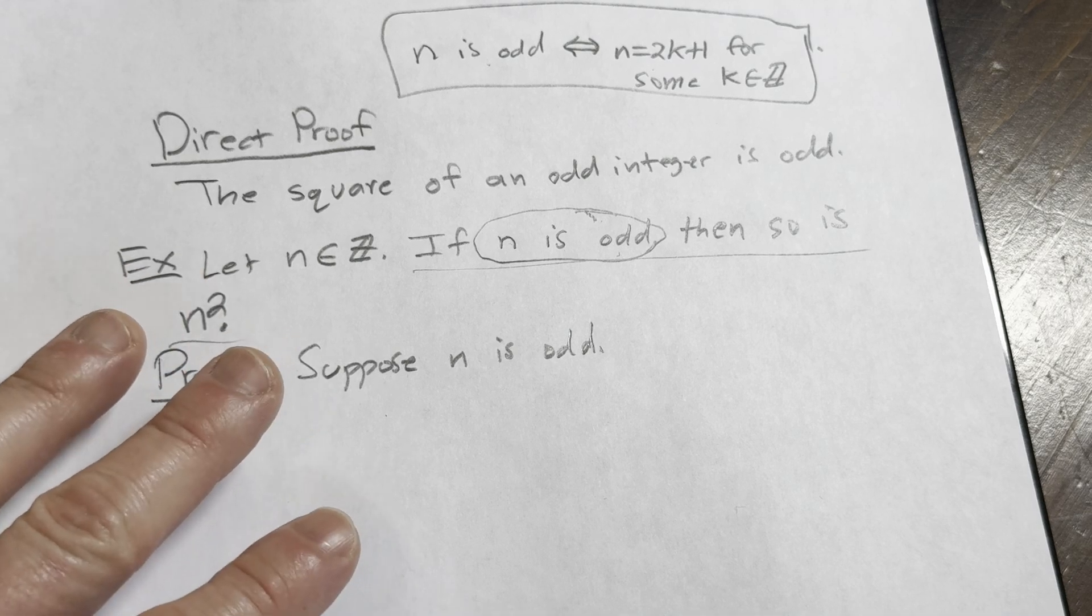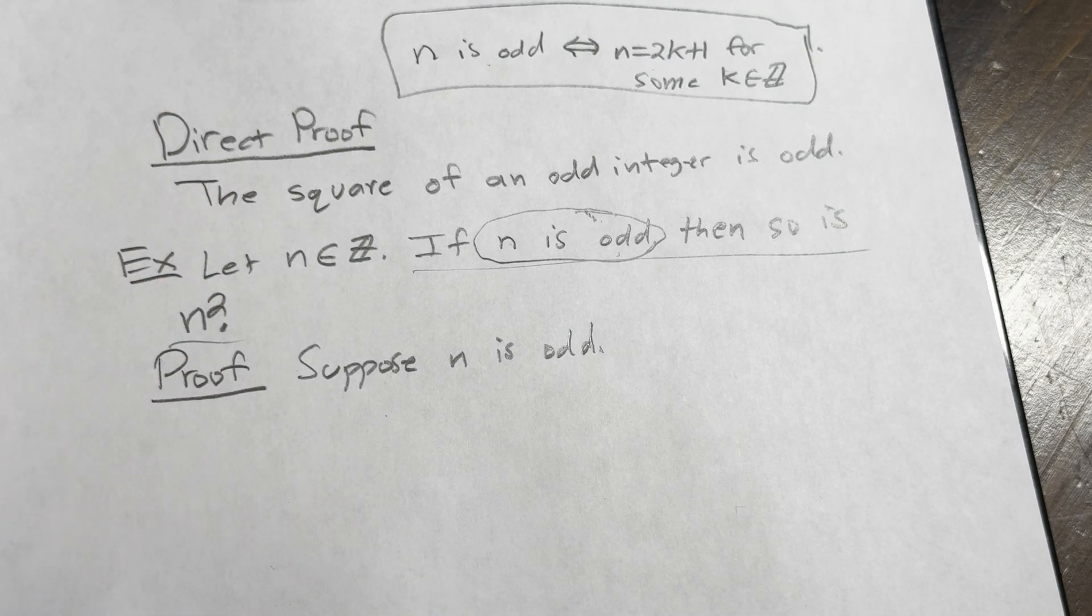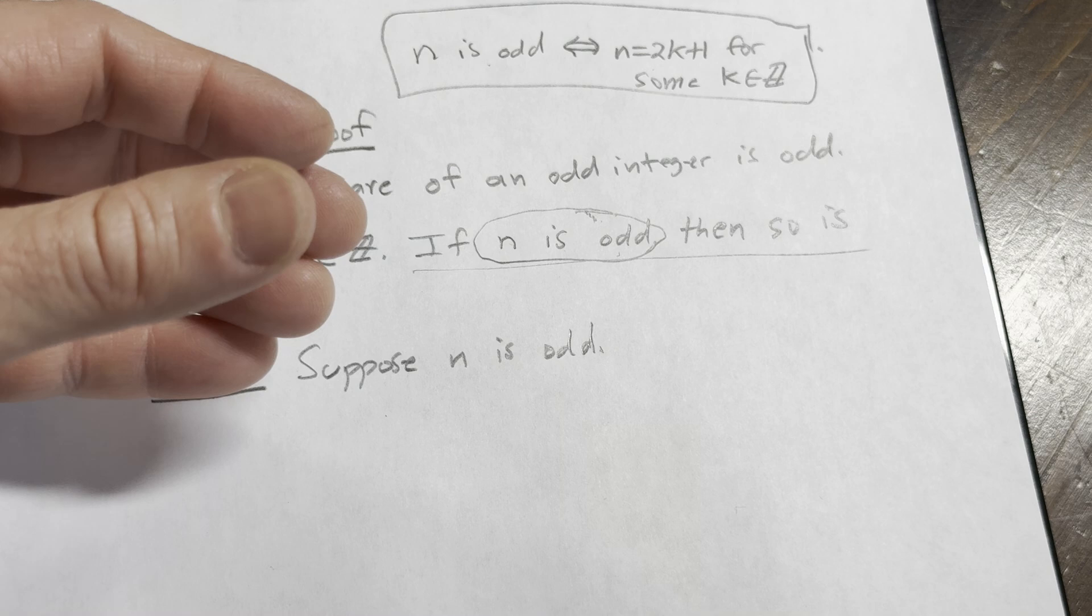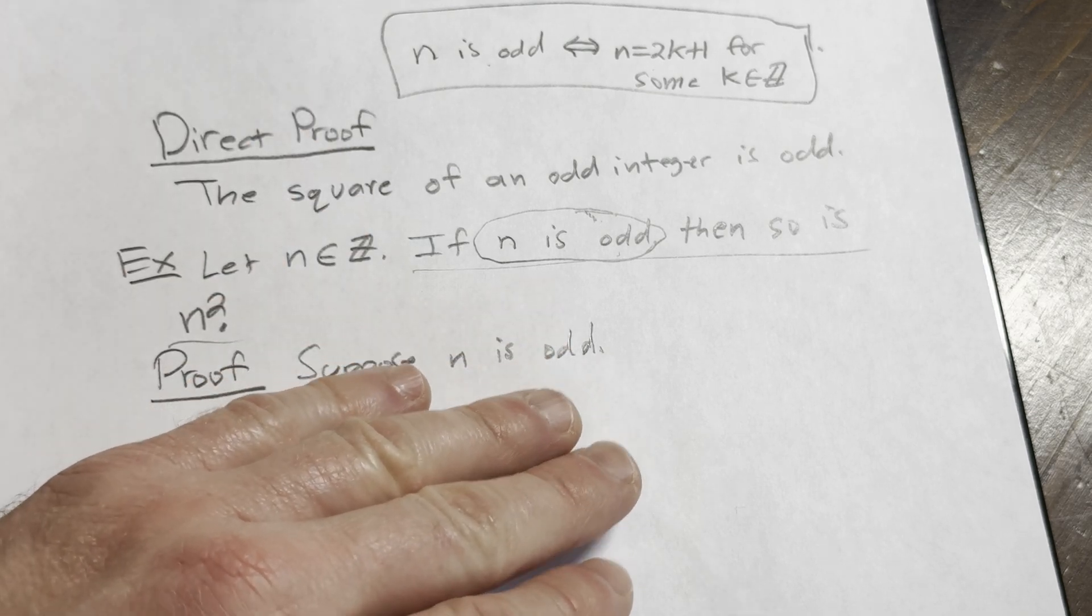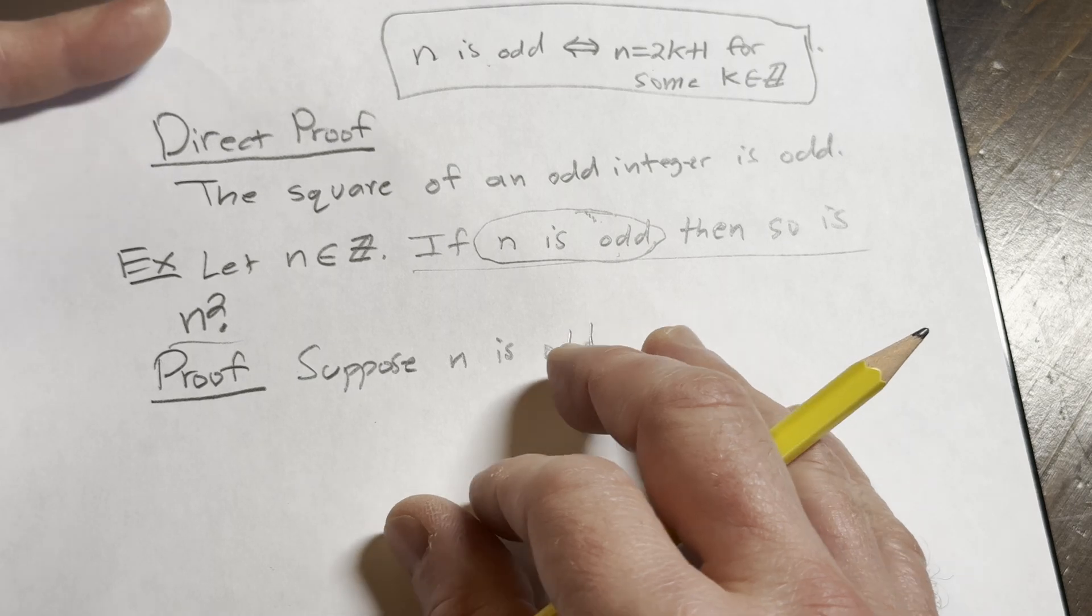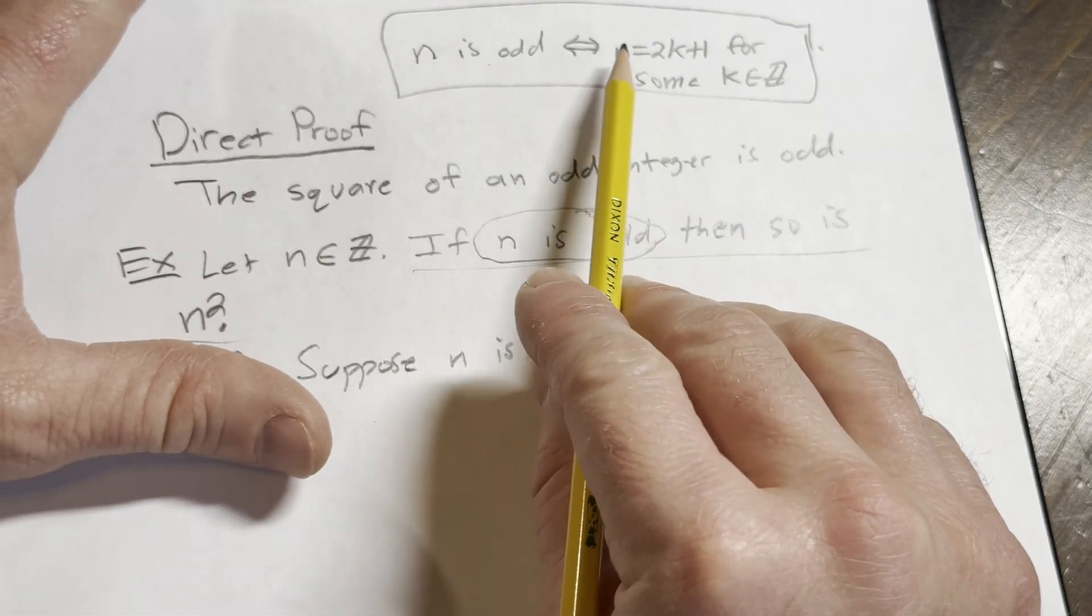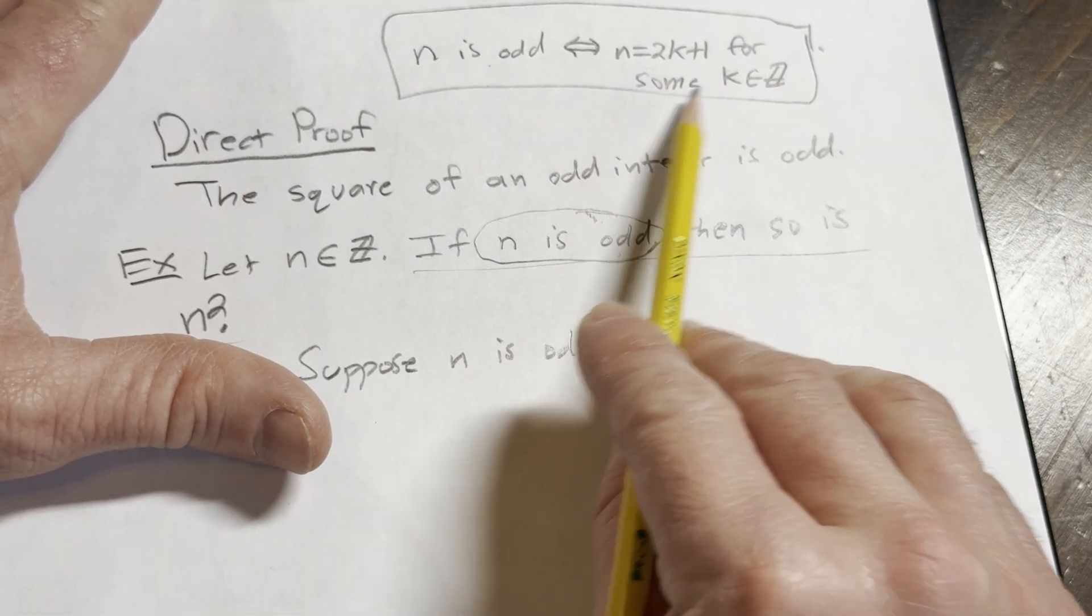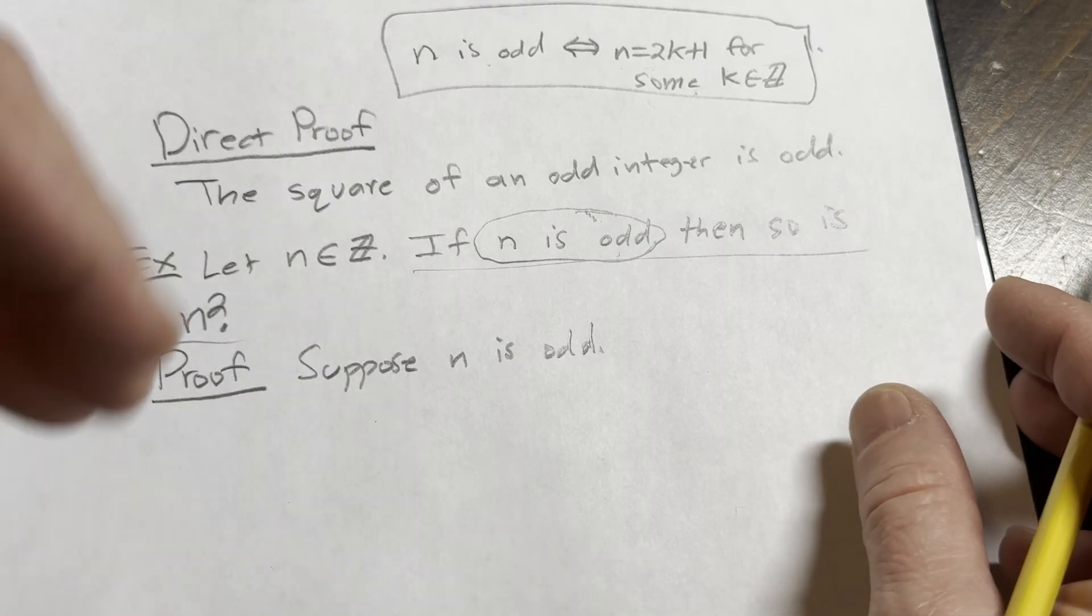And we have to show that n squared is odd. So now what you have to do is, you have to somehow do that. So what do you know at this point? Well, you only know one thing. You know that n is odd. So you try to use what you know. Well, what does it mean for n to be odd? Well, it's up here in this box. n is equal to 2k plus 1 for some k in Z. So then you just write that down.